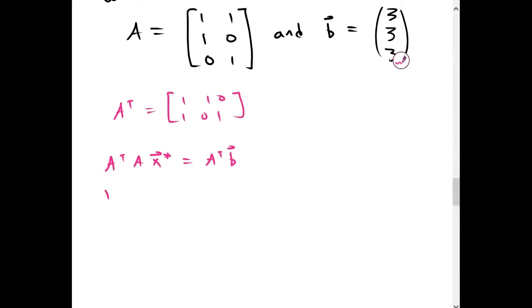This gives us 1, 1, 0, 1, 0, 1 times 1, 1, 1, 0, 0, 1 times X star.